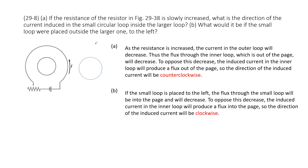So we look at this system. We have a large coil, and we need to determine the direction of the current induced in the small loop inside this larger loop. First, when we look at this larger loop, we can see the current is anti-clockwise.